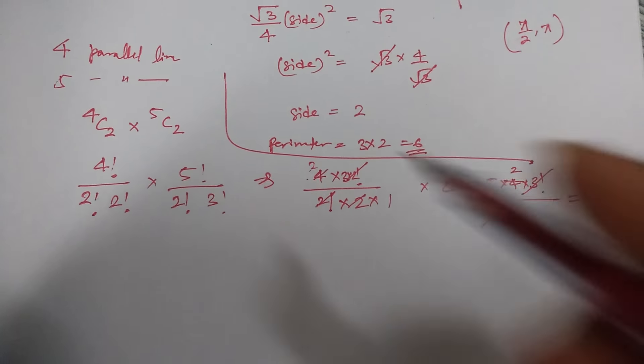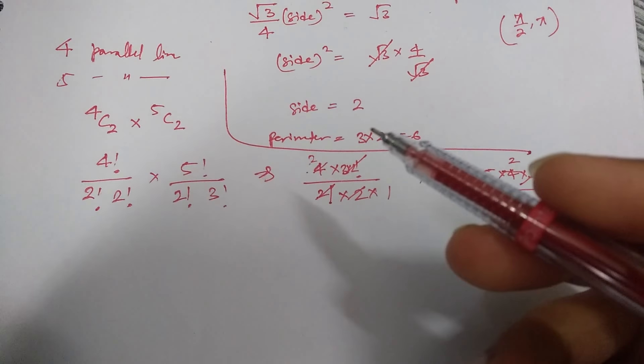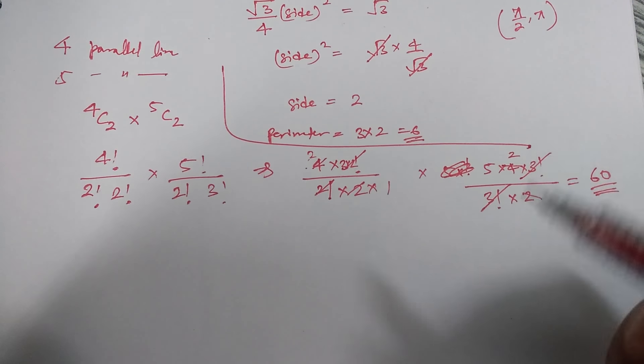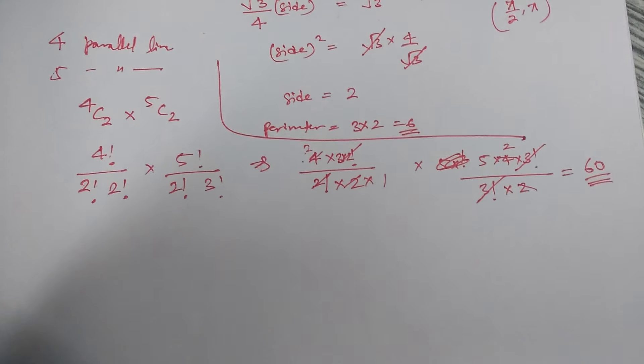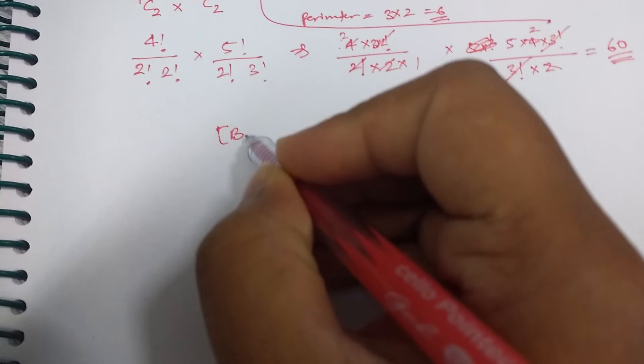So that aptitude part was easy, okay, what I felt. English was also very easy. That two questions came on English, they were very easy. Then coming to the chemistry part, some of the questions which I remember, one question that came on Wade rule, that was very good question.